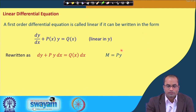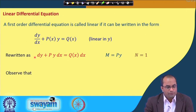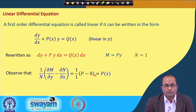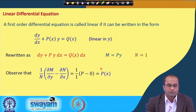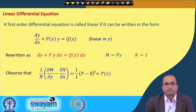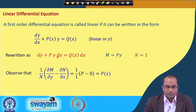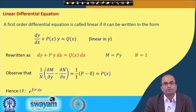Here M is P·y and N is 1, the coefficient of dy. If we compute (1/N)(∂M/∂y - ∂N/∂x), what we get is just the function P, which is a function of x alone. So we can now use the earlier result: when this expression is a function of x only, we have an integrating factor for the M dx + N dy term.